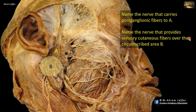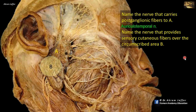Name the nerve that carries postganglionic fibers to A. A is the parotid gland, supplied by the auriculotemporal nerve, which is a branch of the mandibular division of the trigeminal nerve. It carries sensory fibers from the mandibular division together with postganglionic secretomotor fibers originating from the otic ganglion, located close to the mandibular nerve just below the foramen ovale. The otic ganglion is the source of postganglionic fibers accompanying the auriculotemporal nerve to the gland. Preganglionic fibers originate from the glossopharyngeal nerve.